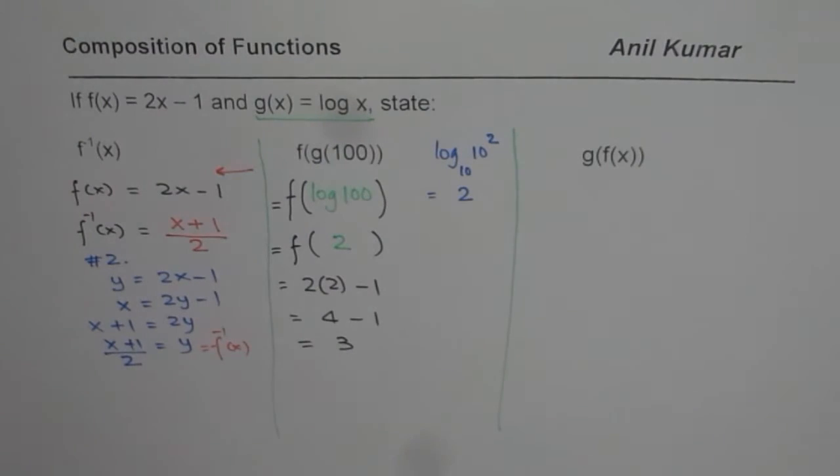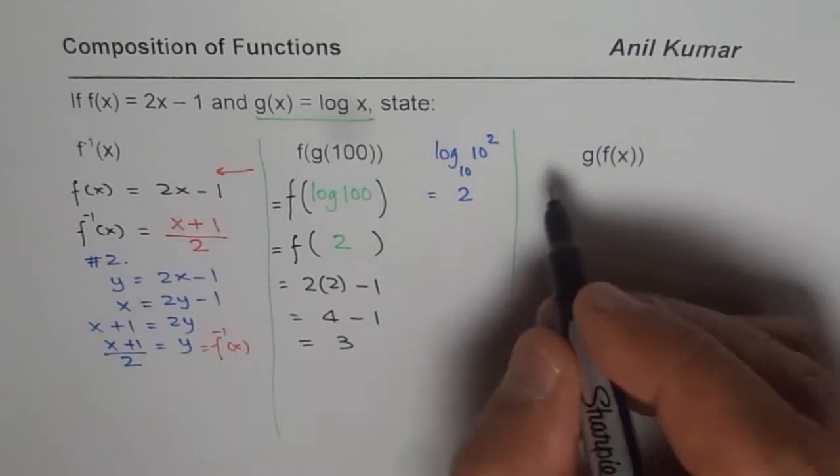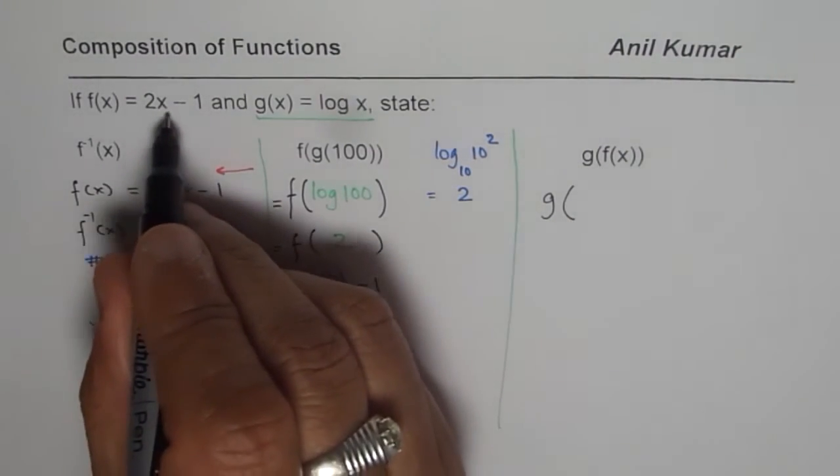So, the answer for the second part of this question is f of g of 100 is 3. Now, let us do the last part of this question. g of f of x. It really means that g is the outside function. And we write down inside function, which is 2x minus 1.